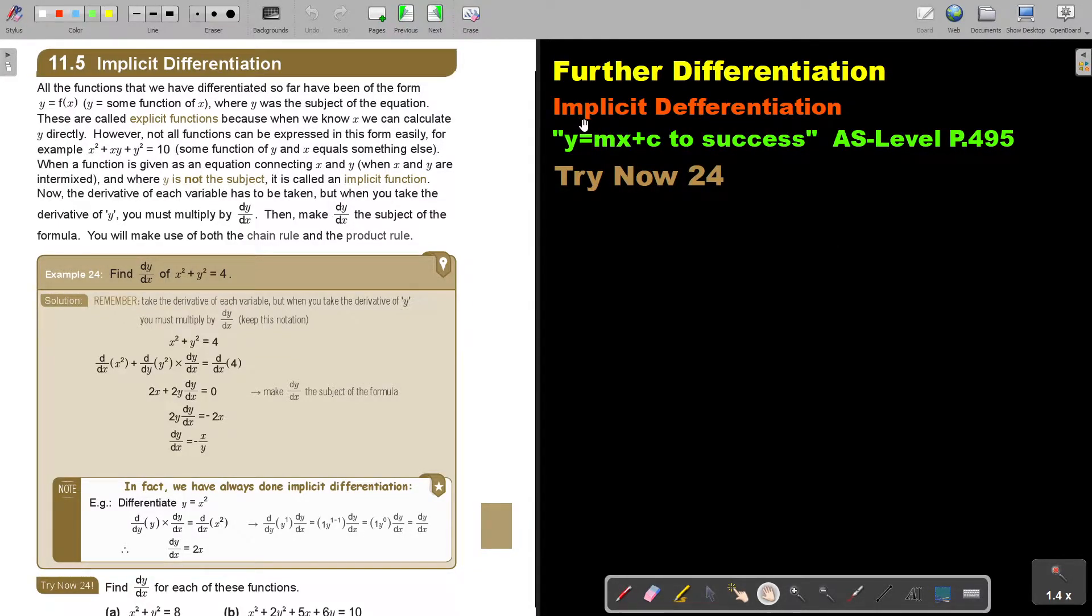In this video we will look at implicit differentiation. You will find this on page 495 in the Namibia AS level mathematics textbook y equals mx plus c to success. Let's start.